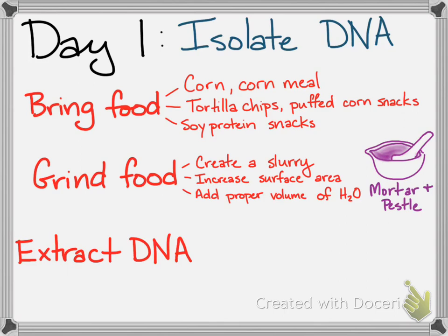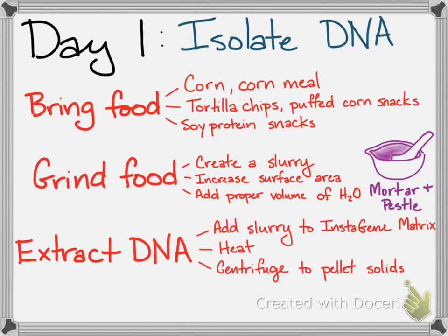Lastly, we're going to extract the DNA, and this is a lot simpler than it seems like it should be. We're just going to add a very specific volume of that slurry to an InstaGene matrix, which comes from the company Bio-Rad that creates this kit. We're going to heat it up in a 95°C water bath and then add it to a centrifuge to take all the solids out. When you centrifuge it, it creates artificial gravity, pulling all the food solids and the InstaGene matrix to the bottom. What you'll have at the top is liquid with your DNA suspended in it — at least, that is the hope.